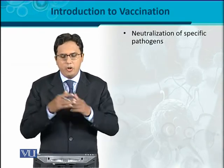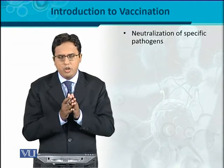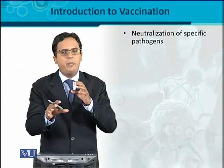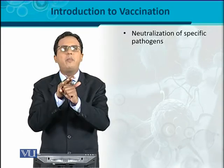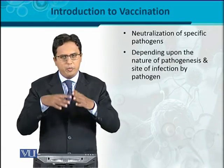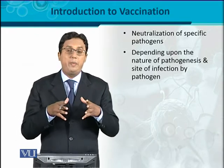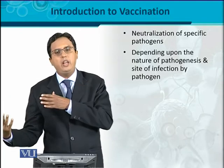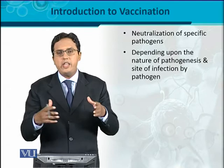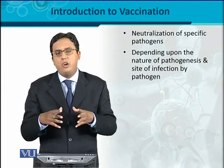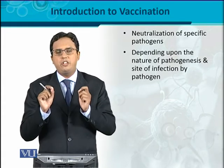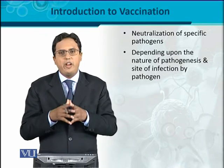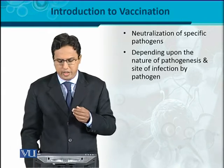Whenever antibodies or humoral components are present, the main purpose is to neutralize specific pathogens. Antibodies bind specifically to pathogen antigens, masking them, and as a result the pathogen is neutralized. Depending on the nature of the pathogenesis and site of infection — whether the pathogen acts extracellularly or intracellularly, whether infection occurs in the blood or tissue — all these factors are very important in order to provide vaccination and protect against such pathogens.